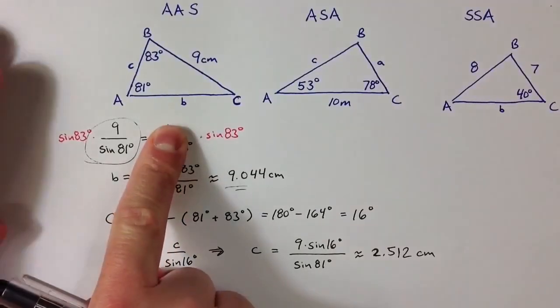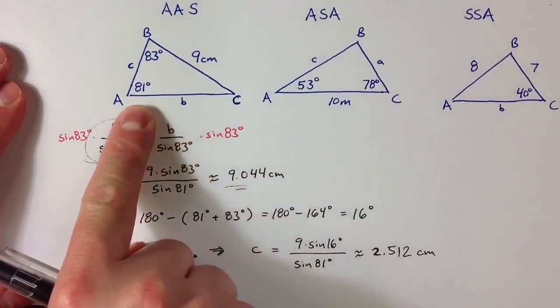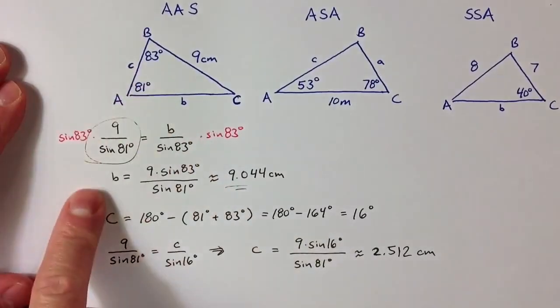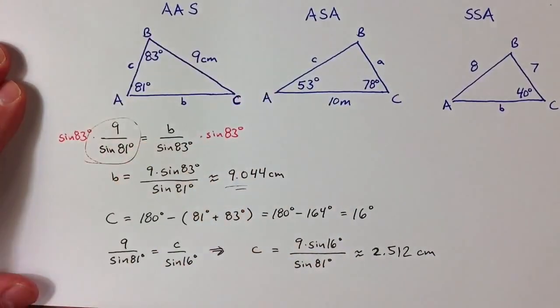So the given information, 9 centimeters, 81 degrees, and 83 degrees, determines the rest of the information about that triangle. And we can use law of sines to figure out what it is.